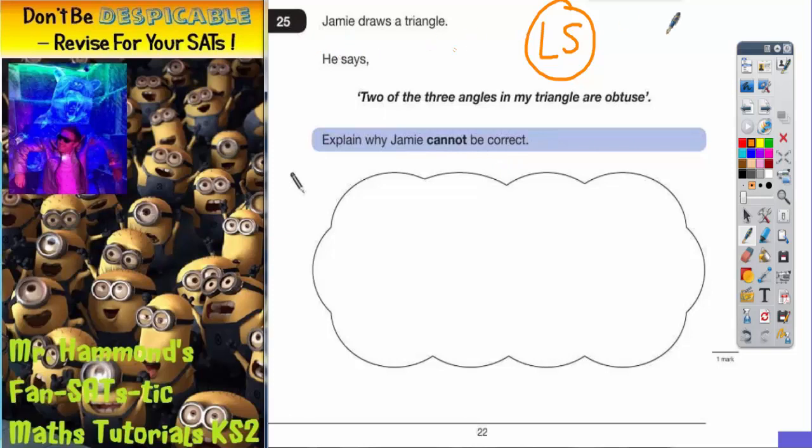It says, Jamie draws a triangle. He says, two of the three angles in my triangle are obtuse. Explain why Jamie cannot be correct.